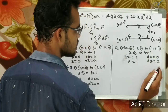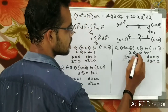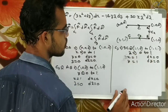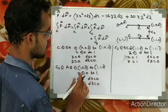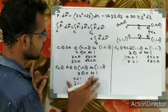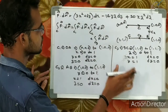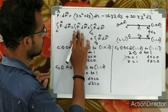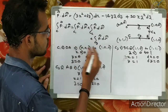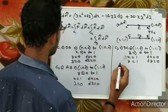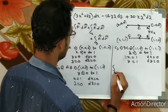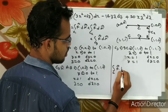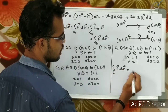Now we substitute the values of each segment into f vector dot dr vector and integrate. For C1: y equals 0, z equals 0, dy equals 0, dz equals 0, so only the (3x squared plus 6y) dx term survives, which simplifies to 3x squared dx integrated from 0 to 1.